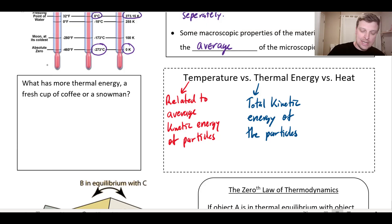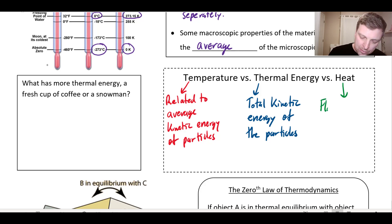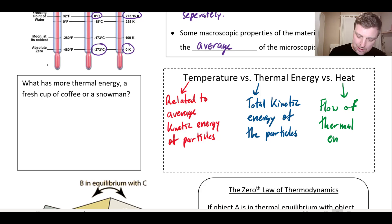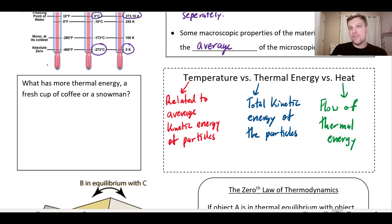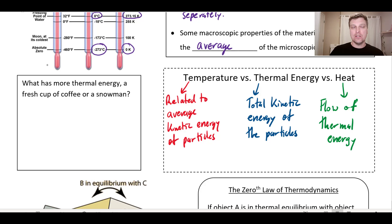Thermal energy, by comparison, is all about the total — it's the total kinetic energy of the particles. Heat is often interchanged with thermal energy, but technically it's different. Heat is all about the flow of thermal energy. That cup of coffee, as it sits there, has a bunch of thermal energy locked away in it. Over time, as it sits on the counter, that thermal energy will flow in the form of heat into its surroundings. Heat is the movement of thermal energy from one object to another — which is really what thermodynamics is all about.